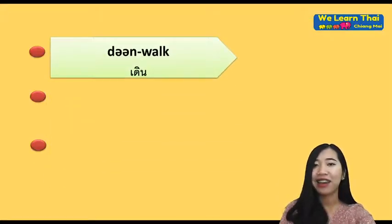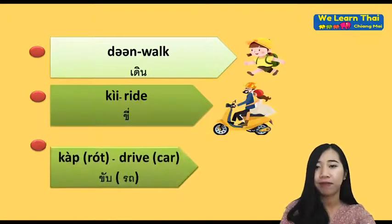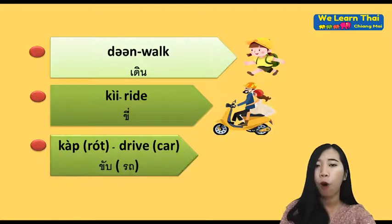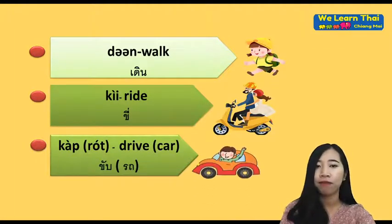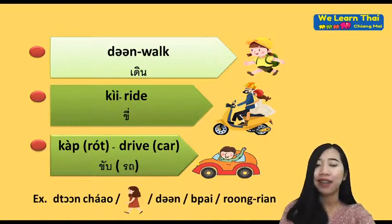Now let's look at some movement verbs. เดิน (dern) means 'walk.' ขี่ (kee) means 'ride.' ขับ or ขับรถ (khap / khap rot) means 'drive' or 'drive a car.' For example: ตอนเช้า ดิฉันเดินไปโรงเรียน — In the morning, I walk to school.